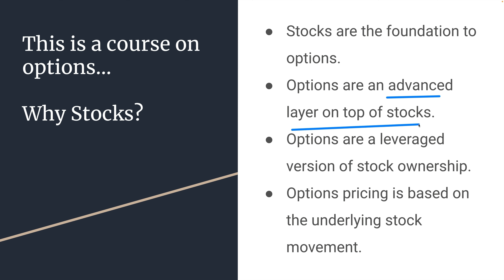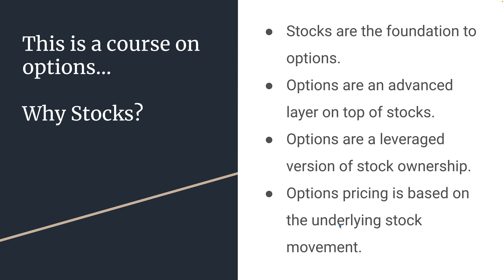As an option moves, the stock moves. As the stock moves, the options move. Options tend to be a leveraged version of stock ownership. For example, if you own one options contract, you actually control 100 shares of the underlying stock. And typically, you buy the options contract for a fraction of the cost of buying the actual 100 shares. Most importantly, options pricing is based on the underlying stock movement. If the stock goes up, the call options price will go up. If the stock goes down, the options price will go down. So options are directly correlated to the underlying price of the stock, which is why the fundamentals of how a stock moves up or down is incredibly important.